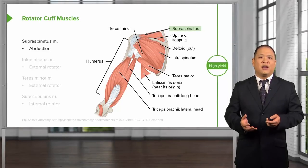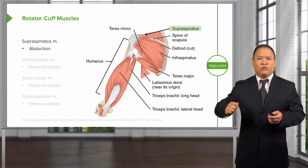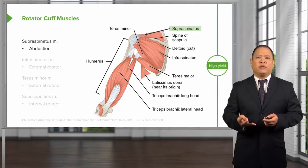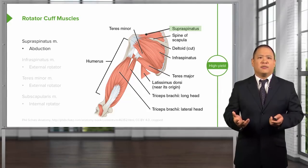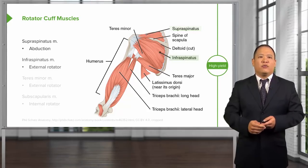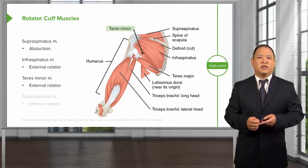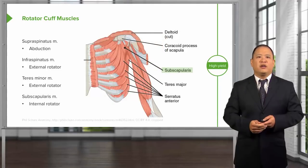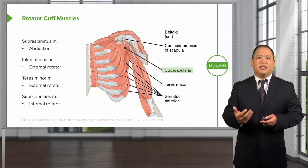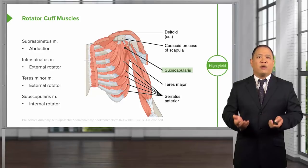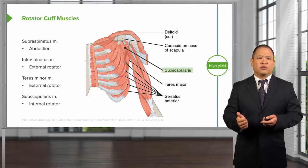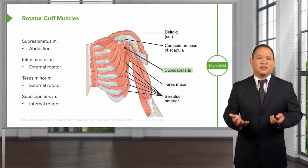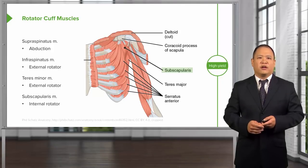The rotator cuff muscles help to stabilize and move the shoulder joint. These four muscles are extremely important to remember. The supraspinatus helps with shoulder abduction. The infraspinatus and teres minor help with shoulder external rotation. The subscapularis helps with internal rotation. A way to remember these muscles is the mnemonic SITS — taking the first letter of supraspinatus, infraspinatus, teres minor, and subscapularis — which spells out SITS.